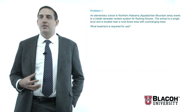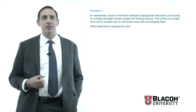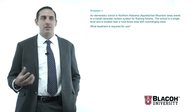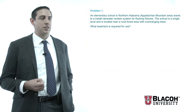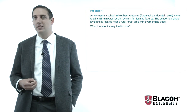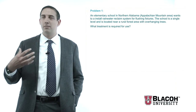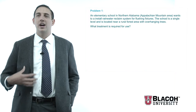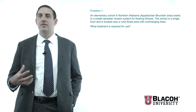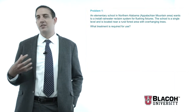Looking at our first situation: an elementary school in northern Alabama in the Appalachian Mountain region wants to install a rainwater reclaim system for flushing fixtures. The school is a single level and is located near a rural forest area with overhanging trees. This is kind of the classic example you would see if you were an MEP or mechanical plumbing engineer working on a school project. There are a lot of different things in this which are going to dictate how we design our system.